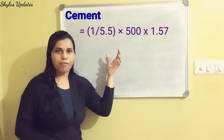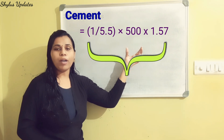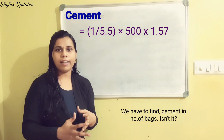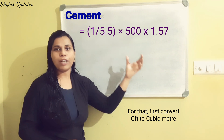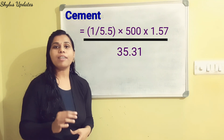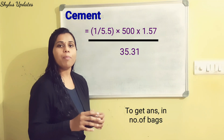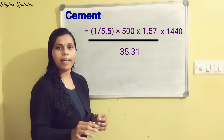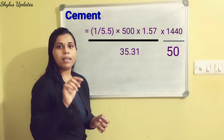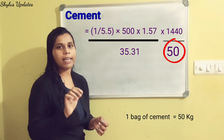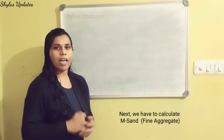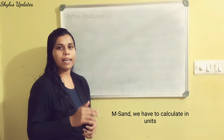We multiply: (1 ÷ 5.5) × 500 × 1.57, which gives a value in cubic feet. To convert to number of bags, we divide by 35.31 to convert cubic feet to cubic meters, then multiply by (1440 ÷ 50). Here 1440 is the unit weight of cement and 50 means 1 bag of cement equals 50 kg. When we multiply all these values, we get 114 bags of cement.